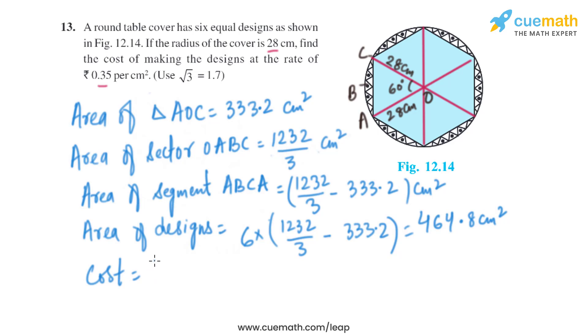Now to find the cost, we just need to multiply 0.35, because the rate is given, with 464.8, and we'll get the cost as rupees 162.68. So that is the cost of making the designs.